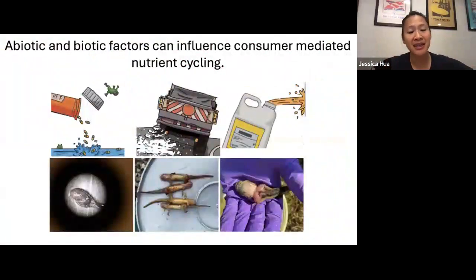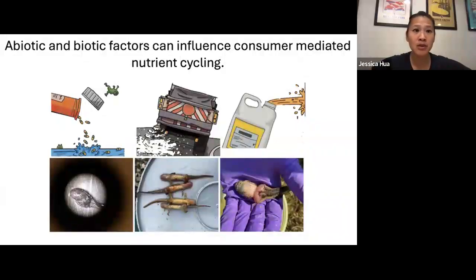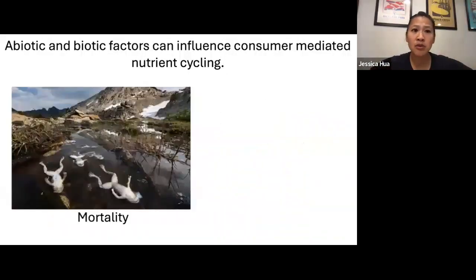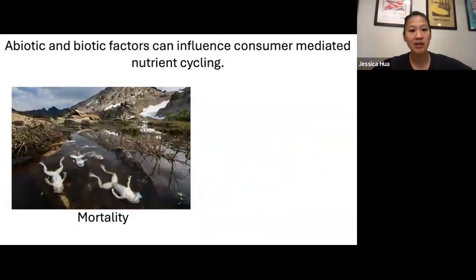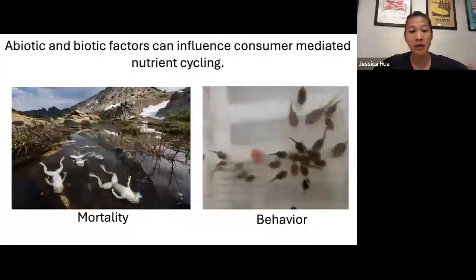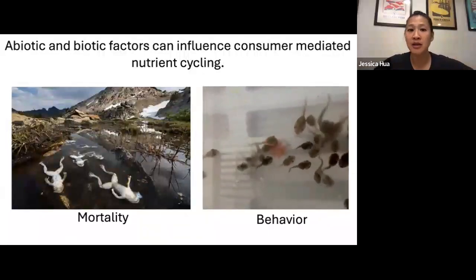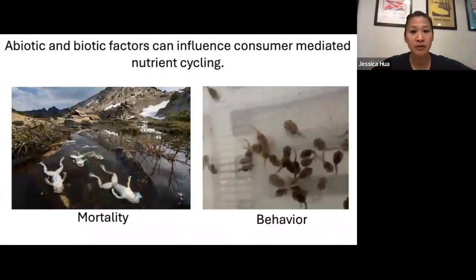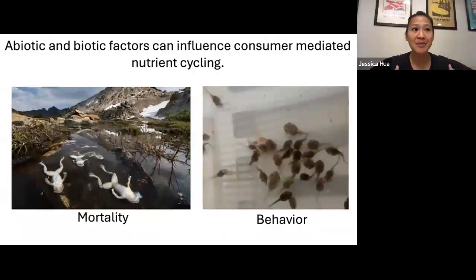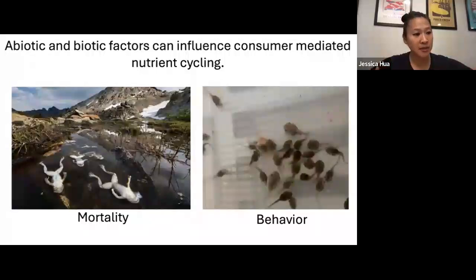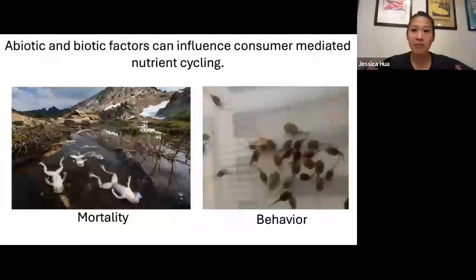Many different factors influence how animals move nutrients from one location to the next. Abiotic factors like pollutants or biotic factors like diseases can change how animals move nutrients. One way is through direct mortality — removing animals from the system — which influences nutrient cycling. More subtly, these factors can change important behaviors like feeding or excretion. If pollutants or diseases change how animals feed and excrete, this affects where nutrients are found, shaping what communities look like and what can persist.